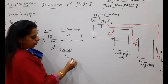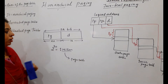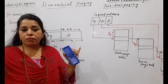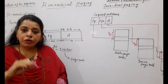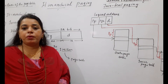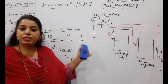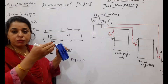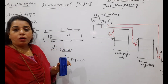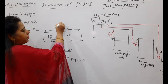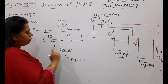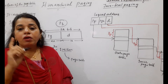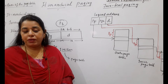One million entries should also be there in the page table. Just imagine — your process itself is having 1 million pages, and the page table must also have 1 million entries. To store that huge page table, you need to find that much contiguous space in the main memory. Finding such contiguous space in main memory is quite difficult.